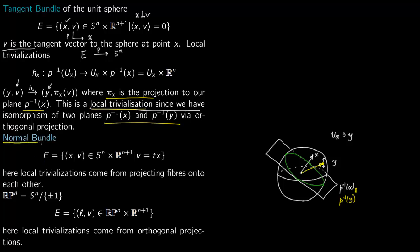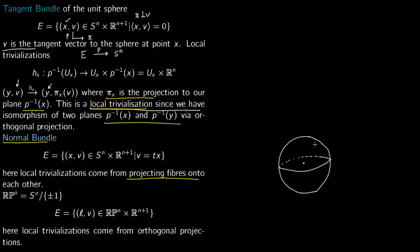The second example is the normal bundle. Again you have pairs (X, V) where X comes from the sphere S^n and V comes from R^{n+1}, with V equal to t times X for some scalar t. The normal bundle at X is just scalar multiples of the position vector — so you have t·X lying in R^{n+1}.